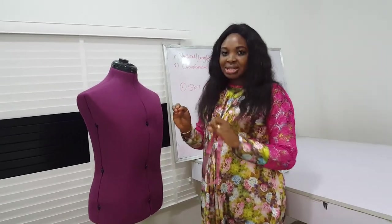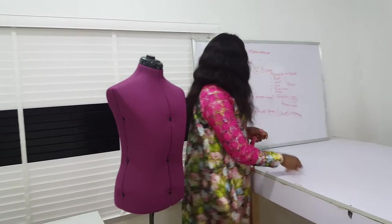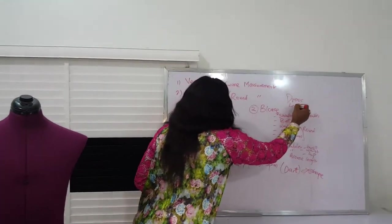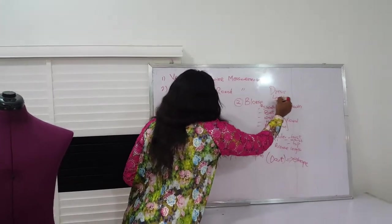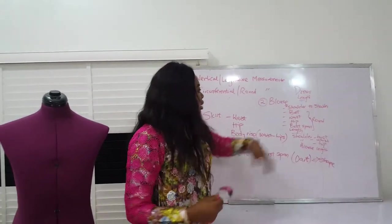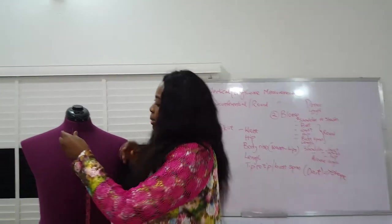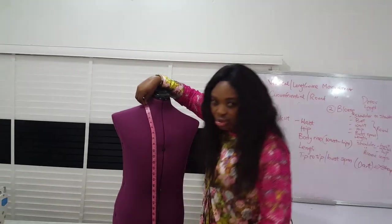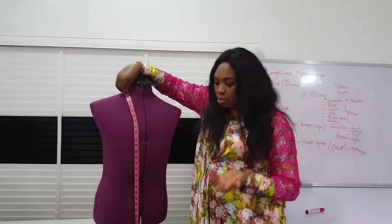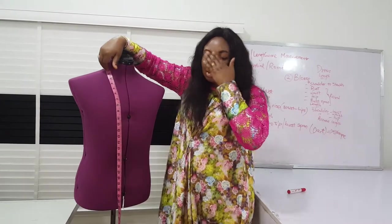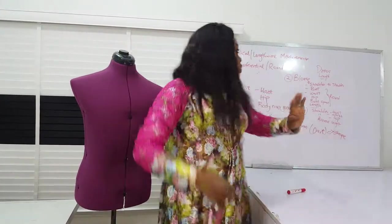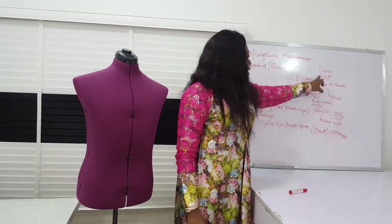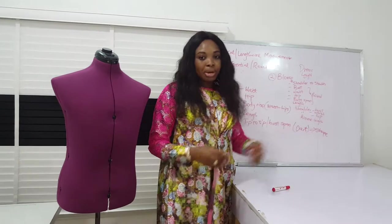A dress is an extension of the blouse measurement. The only difference is the length. To take the length of a dress, put your tape at the side of the neck and get your desired length — it can be a short dress, knee length, three-quarter length, or a floor length dress. That's the difference between the blouse and the dress; for the dress you take all these same measurements but the length is longer.